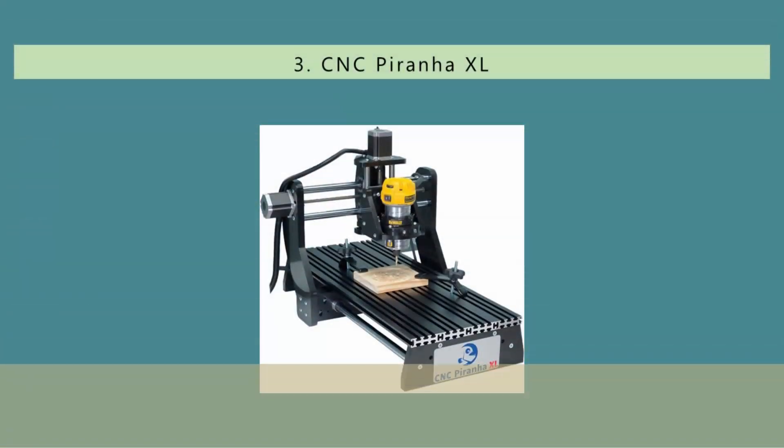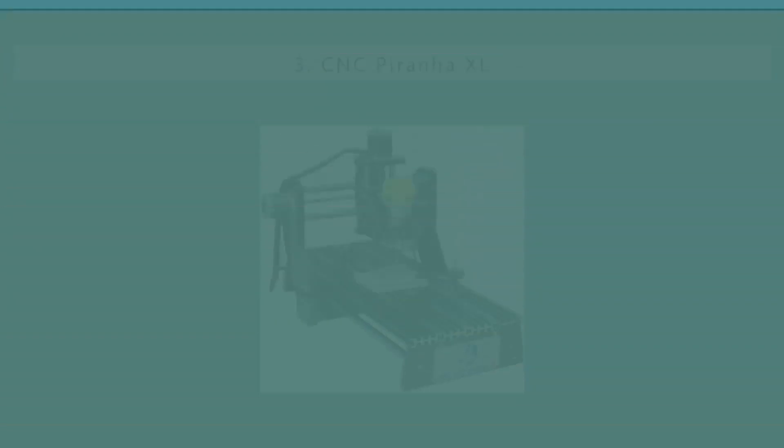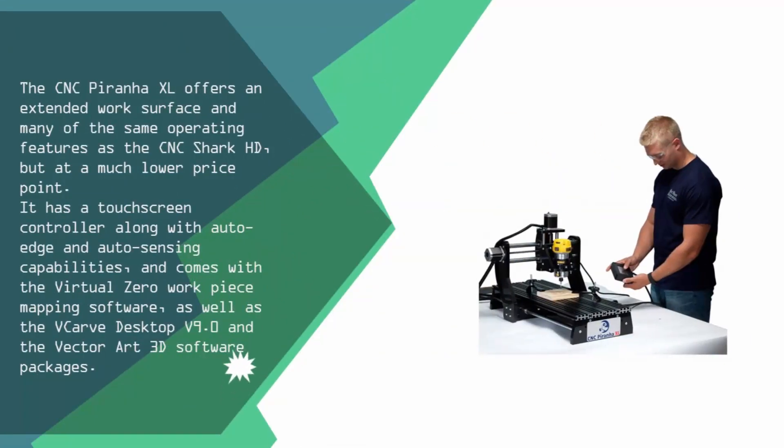Halfway through our list at number 3, the CNC Piranha XL offers an extended work surface and many of the same operating features as the CNC Shark HD, but at a much lower price point. It has a touchscreen controller along with auto-edge and auto-sensing capabilities, and comes with the Virtual Zero workpiece mapping software, as well as the VCarve Desktop V9.0 and the Vectric R3D software packages.